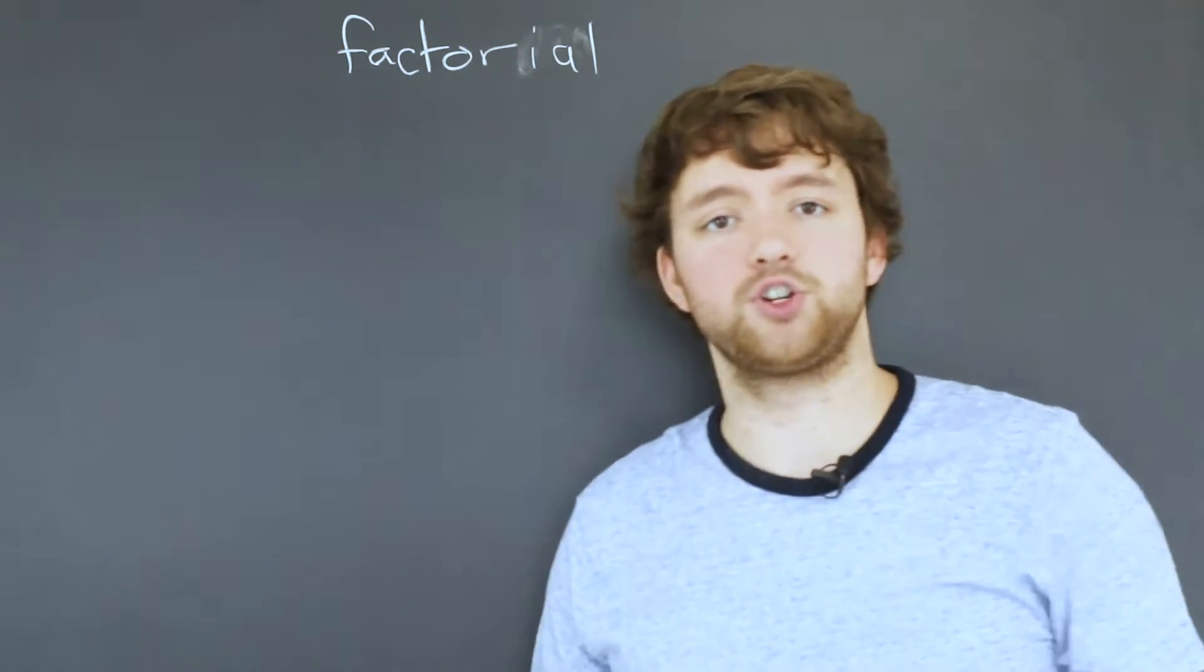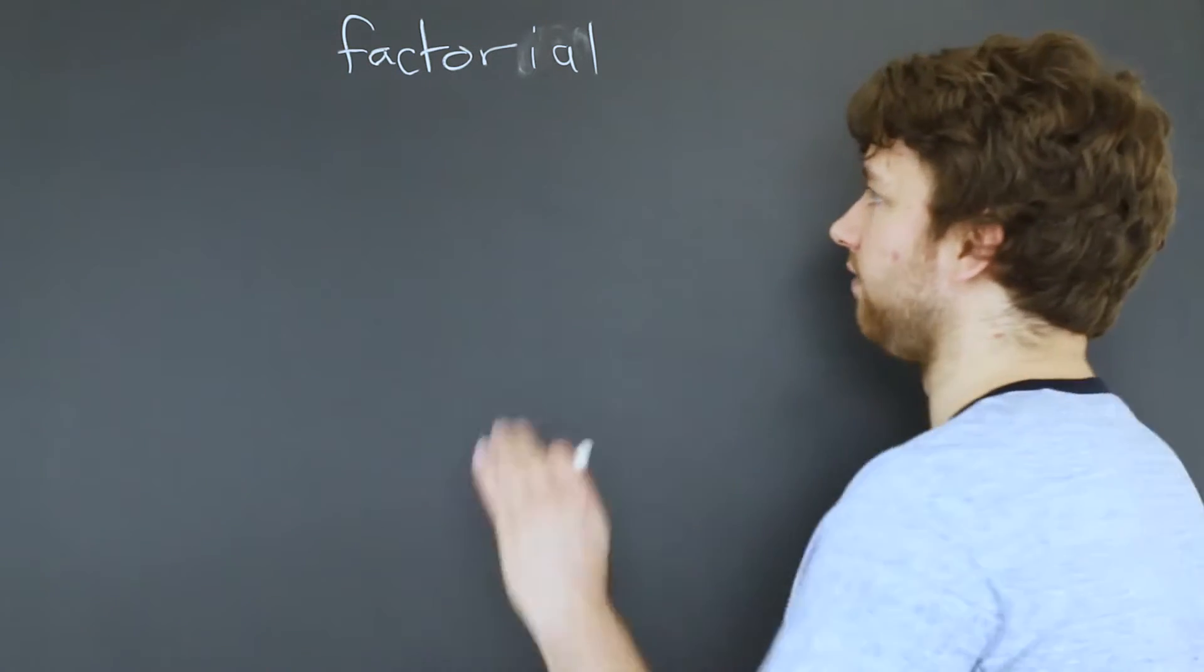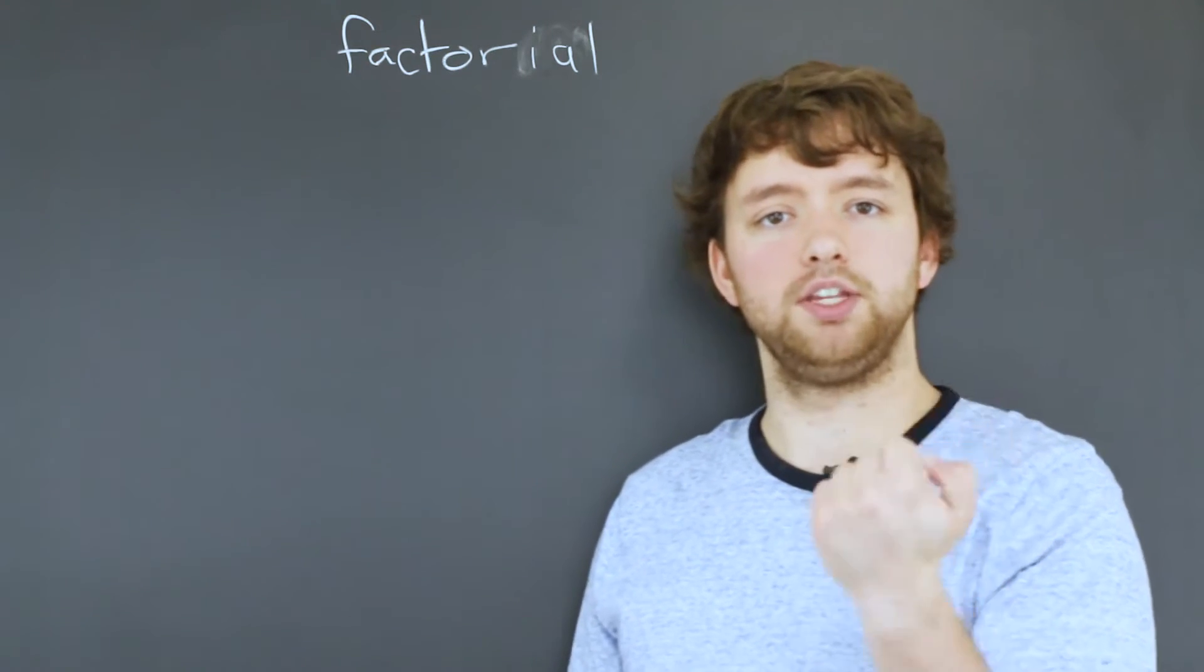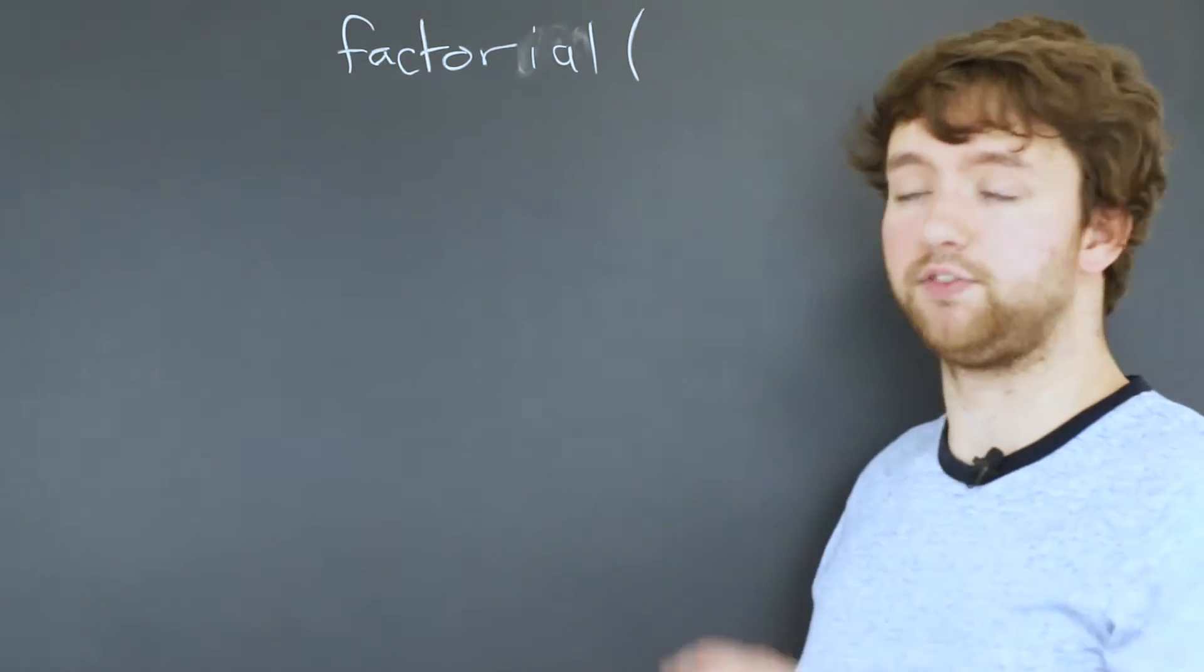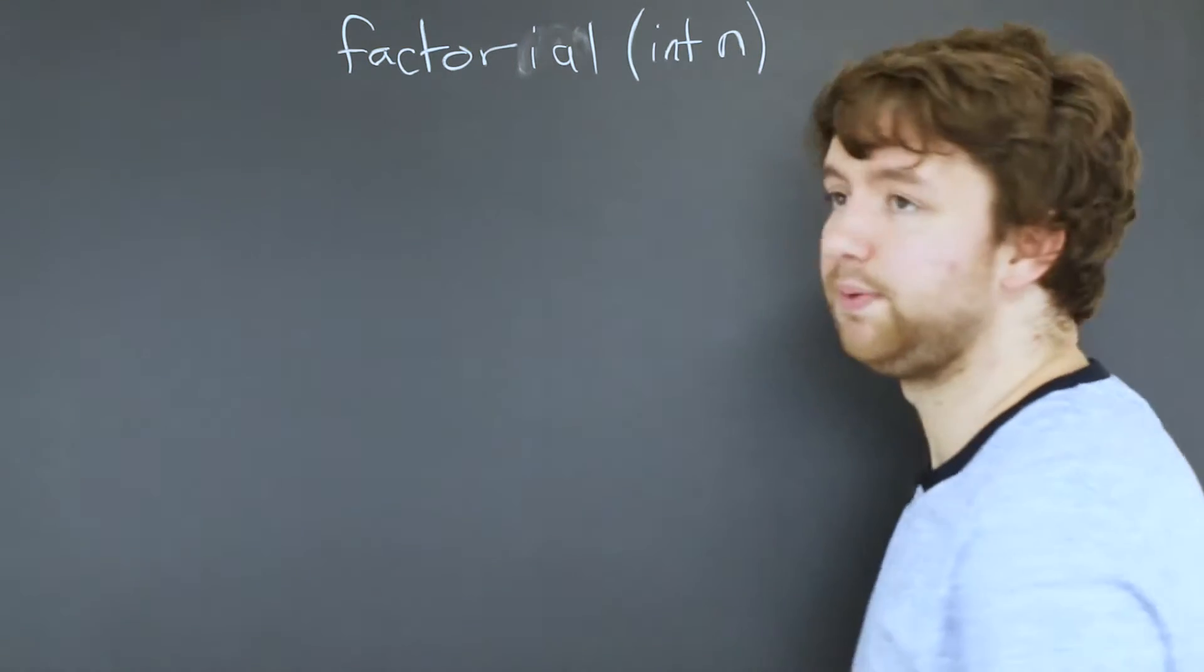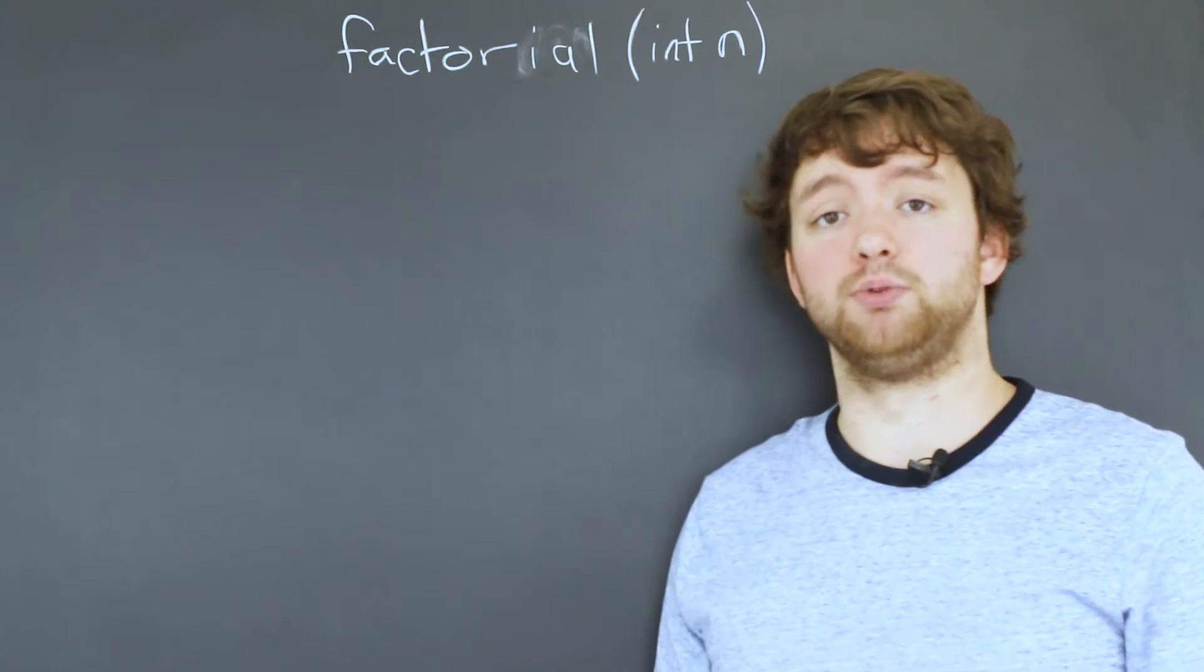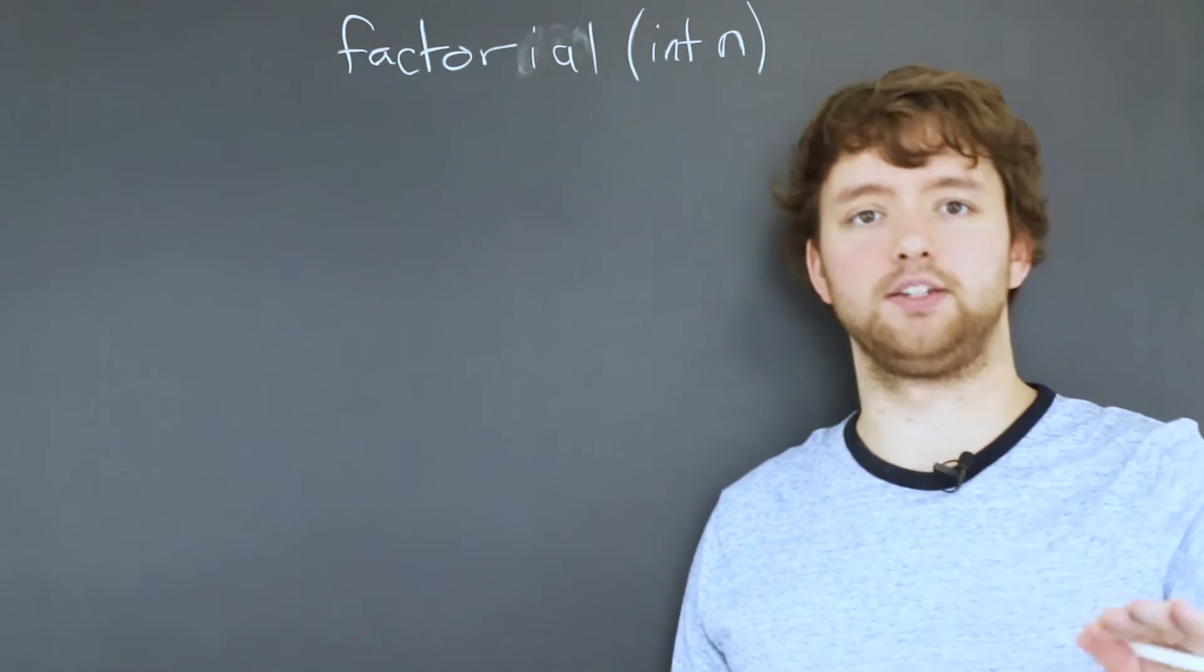Factorial. Now in order for this function to work we need some input and when we're defining a function we say up front here are the data here's the data that we need and these are known as parameters and they're defined in parentheses after the function name. So we could say int n and we give it a name in this example we just gave it the name n and it's named because it's an actual variable it's just only usable within this function. After this function it doesn't exist.